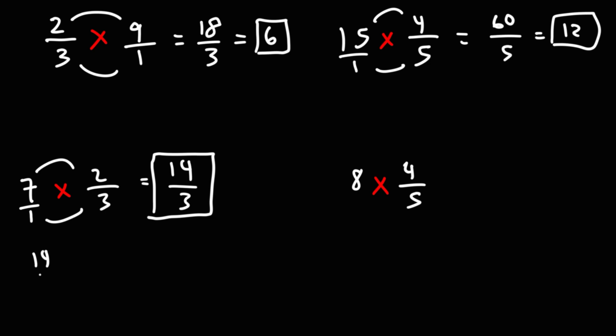If you want to convert this to a mixed number, we can break down 14 over 3 into 12 over 3 plus 2 over 3. 12 plus 2 is 14. Now, 12 divided by 3 is 4. So we have 4 plus 2 thirds, which is 4 and 2 thirds.